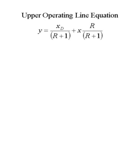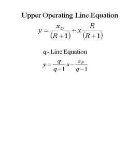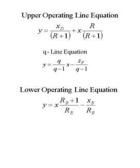As a review, let's look at the various operating lines and Q lines for a column. The upper operating line equation gives the mole fraction in the vapor phase equal to the distillate target mole fraction over R plus 1, where R is the reflux ratio, plus the mole fraction in liquid phase times R over R plus 1. We also have a Q line equation as a function of Q and the feed composition Z sub F. The lower operating line gives the mole fraction in vapor equal to the mole fraction in liquid times (Rb plus 1) over Rb, where Rb is the boil-up ratio, minus Xb over Rb.